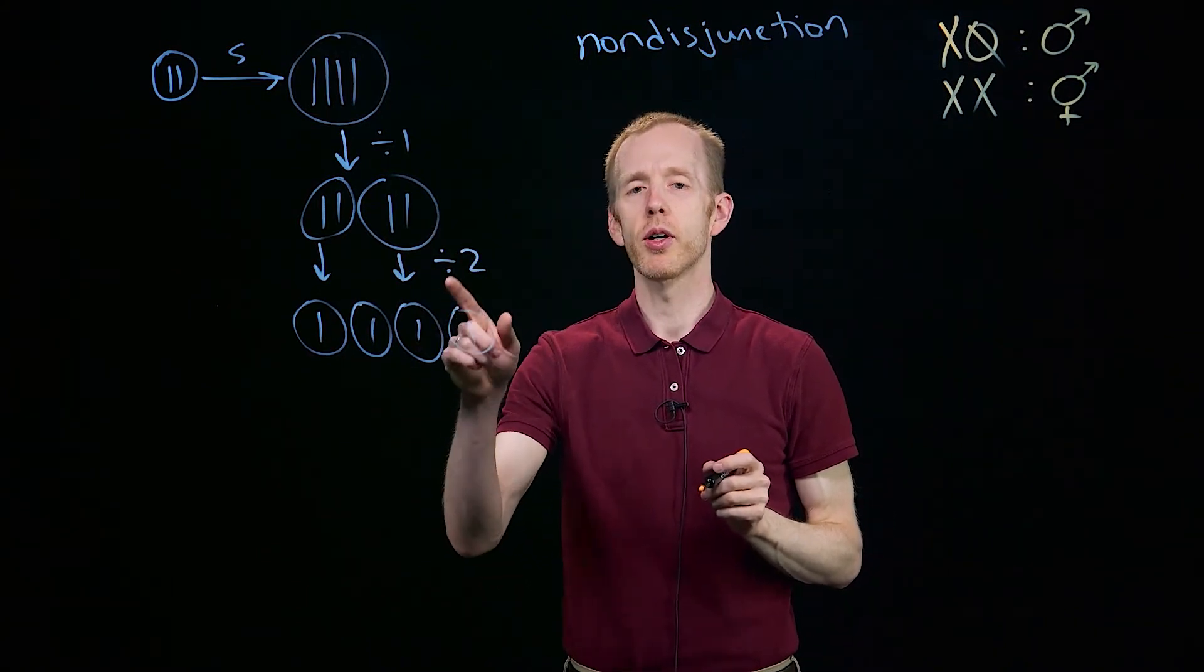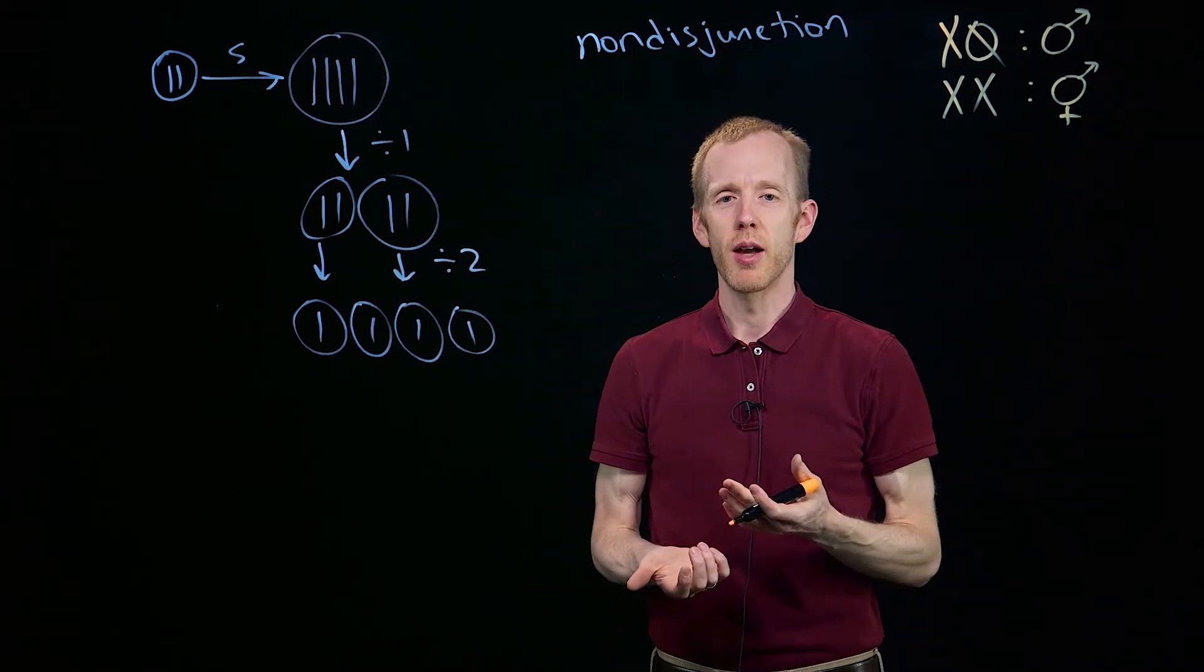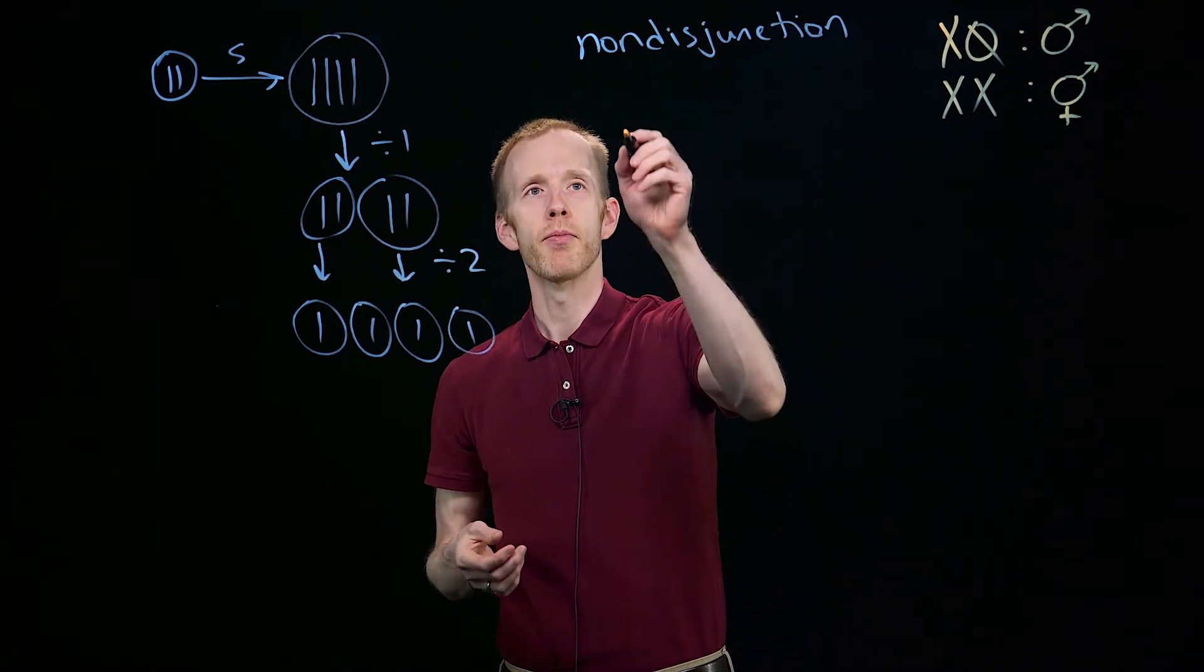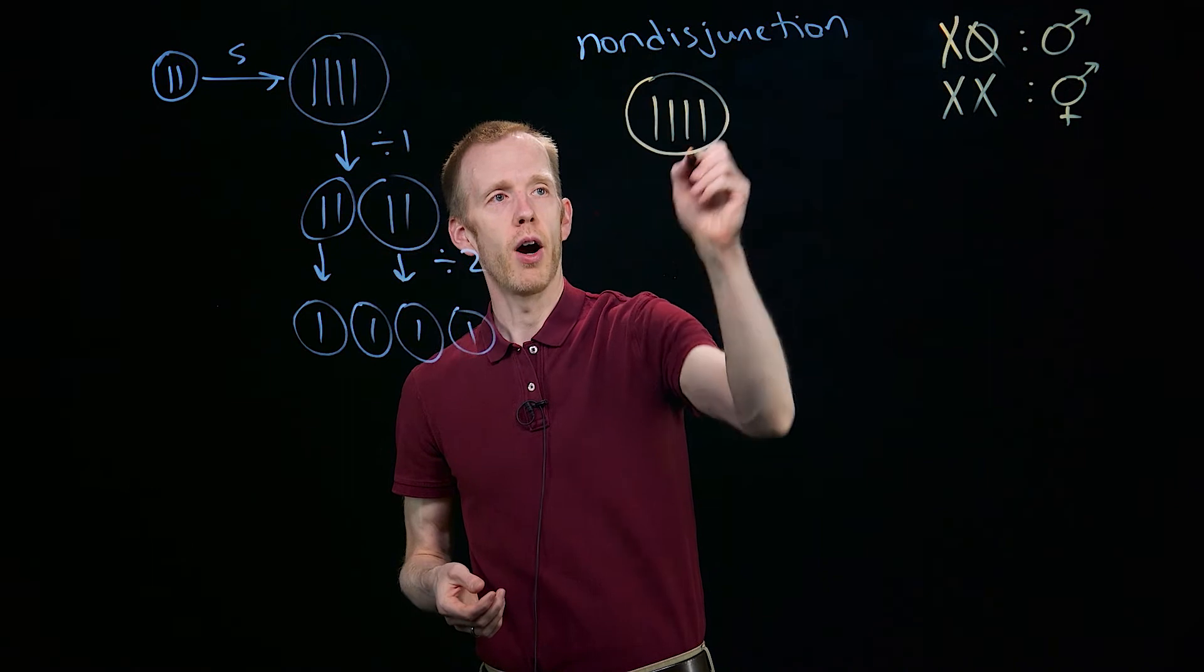In this case, what happens during meiosis occasionally, maybe 1 in 500 times, 1 in 100 times in C. elegans, naturally, just by chance, that cell division process goes awry.